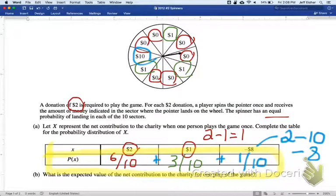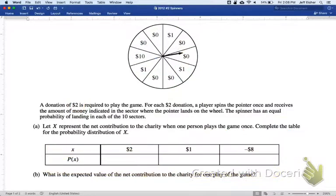And then question B says, what's the expected value? Well, we had, this was 60%, this was 30, this was 10. The expected value, there's a formula on the formula sheet that looks like this. The expected value of a random discrete variable is the sum of x times the probability of x.